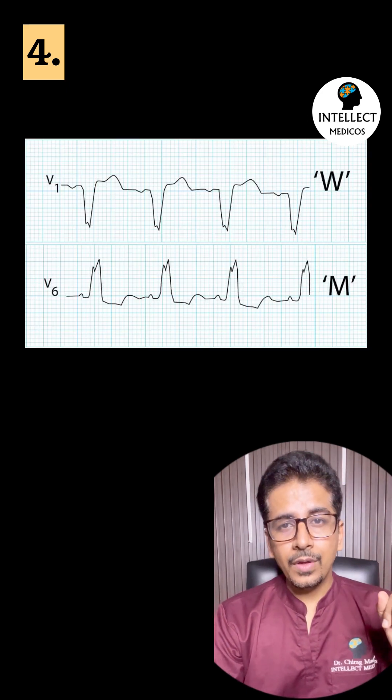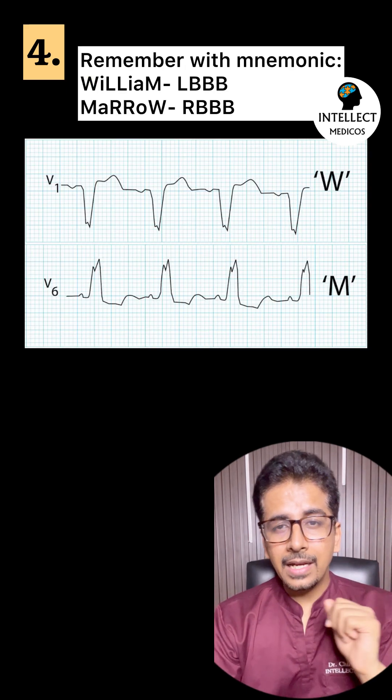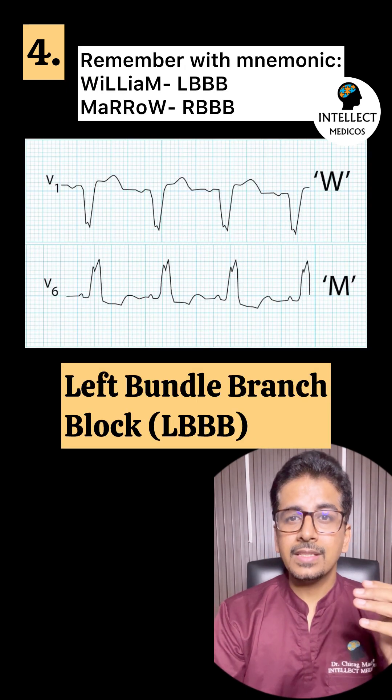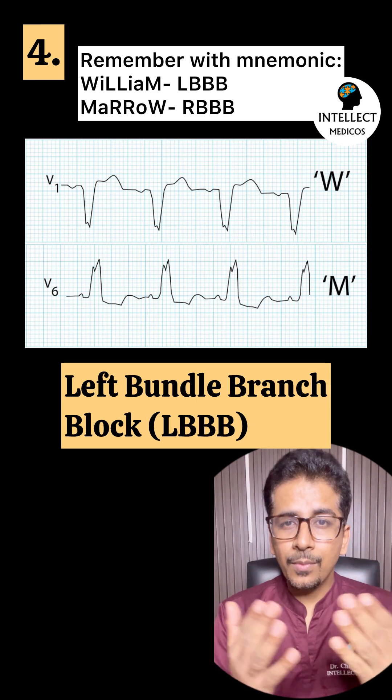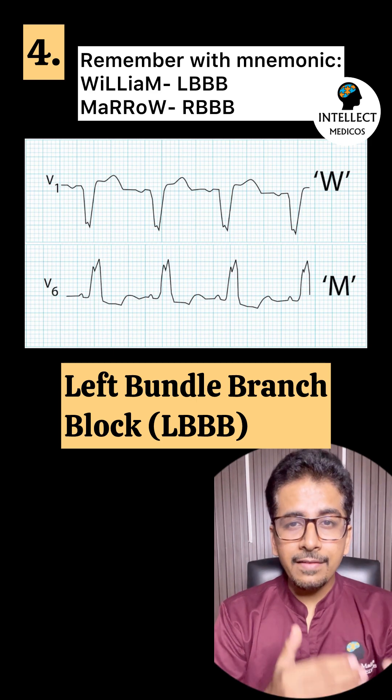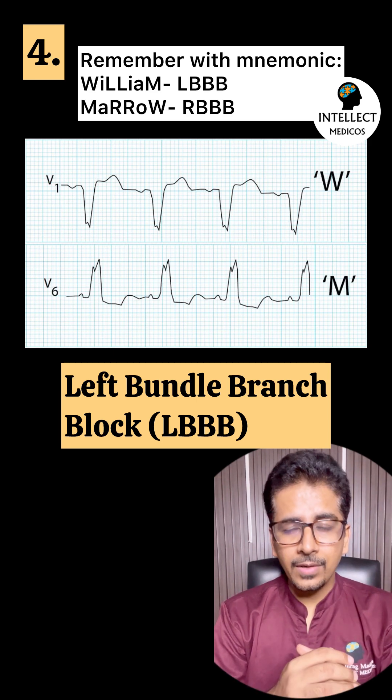Fourth: there is a W pattern in V1 and M pattern in V6. This is William, or you can say left bundle branch block.